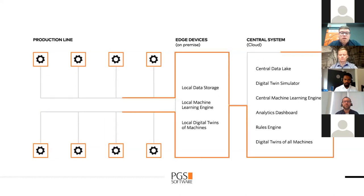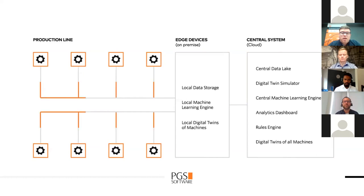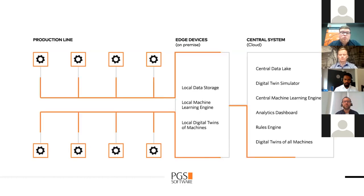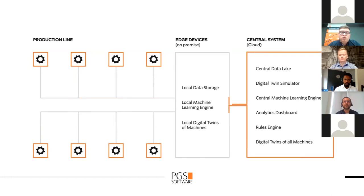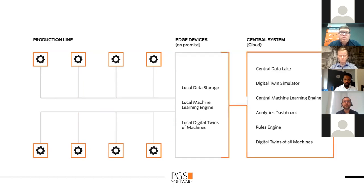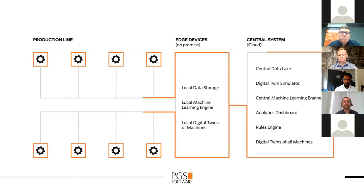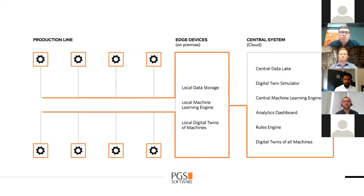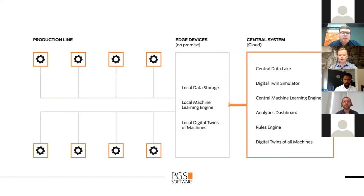Thanks to that, we are able to quickly recognize where improvements into processes could be made. Also, thanks to the micro-optimization method used here, we are able to continually adapt to different factors like environmental ones, supply chain, or certain kinds of savings. That's pretty much the high-level overview.